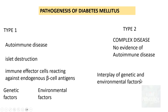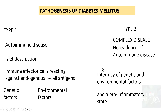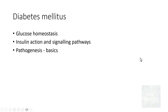Whereas type 2 is a complex disease — there is no evidence of autoimmune disease in type 2 diabetes mellitus. Of course there is an interplay of genetic and environmental factors, but there is also a pro-inflammatory state in type 2 diabetes mellitus. The detailed pathogenesis of both entities will be explained in the next session.